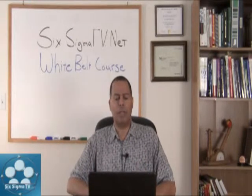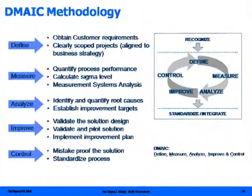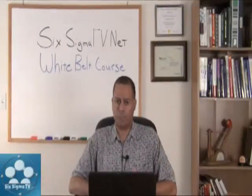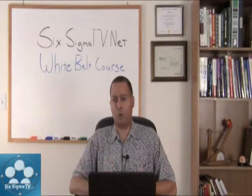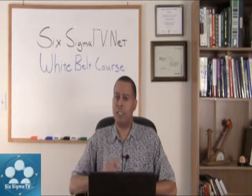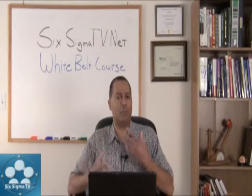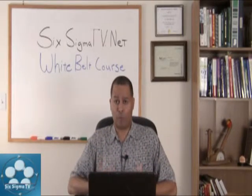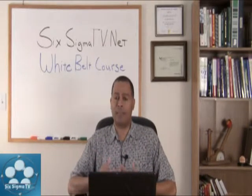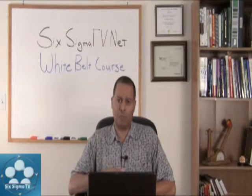The next phase after Measure is Analyze. Here we identify and quantify the root causes and establish your improvement targets. We've driven down into your data to identify the root causes of your issues — why you're not meeting customer requirements, why your Sigma level is low, why you're having defects, why your rolled throughput yield or cycle times are too long. We analyze that and establish improvement targets.